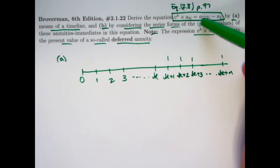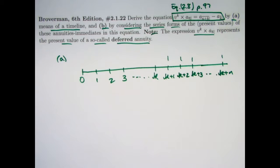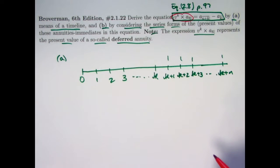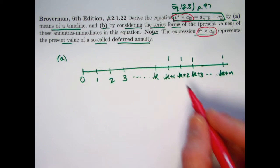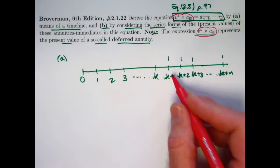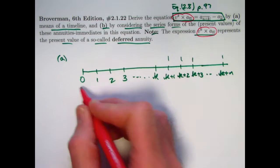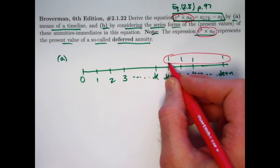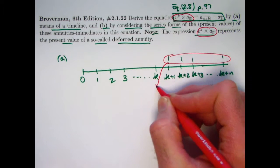In terms of these A's, these present values of annuities immediate, certainly this expression is the simplest way to think of the present value of this income stream at time zero. First, take this income stream and pull it back to time K.